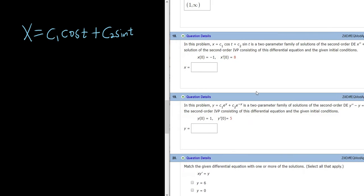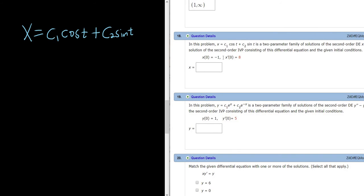So the initial value problem is this differential equation along with these two conditions. To do that, we have to use these two conditions and this x here to find the values of c1 and c2. So I'm going to write down the conditions down here. So x of 0 is negative 1 and x prime of 0 is equal to 8.